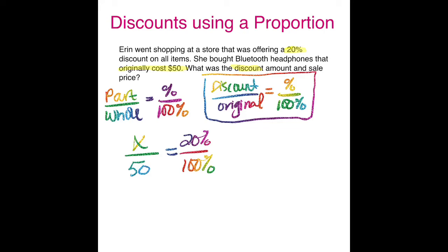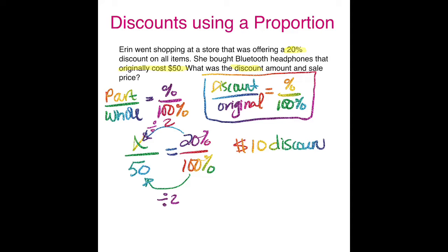There are a few ways to solve this proportion. I can use a scale factor and figure out how to get from 100 to 50, then apply that same scale factor to 20 to get X. Or I could cross multiply and divide: 50 times 20, divided by 100. I think it's easier to use the scale factor. 100 times one-half equals 50 — or equivalently, dividing by 2. So when I divide 20 by 2, I get $10.